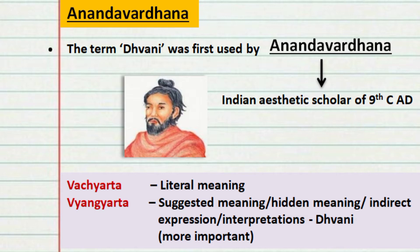According to Anandavardhana, the Vinyartha is more important than Vajhyartha. For example, consider the sentence: 'He lives in the library.' The literal meaning is already understood — that is Vajhyartha. The Vinyartha of this sentence is that this man is a bookworm, he loves to read, so he is always seen in the library. This suggested meaning that we understand from a sentence is called Dhvani.